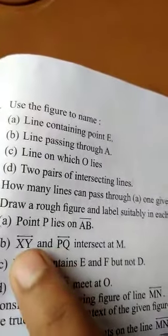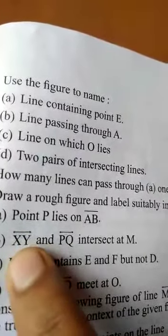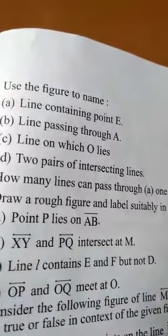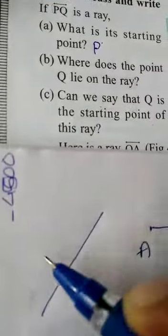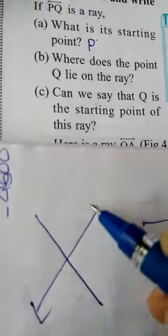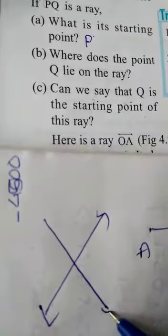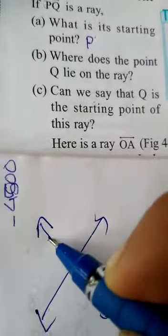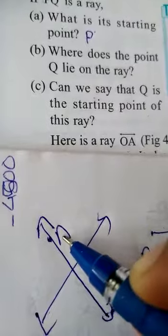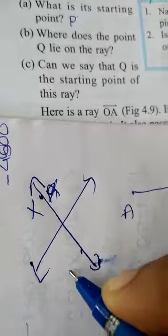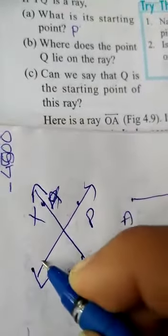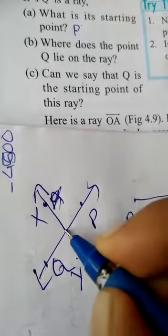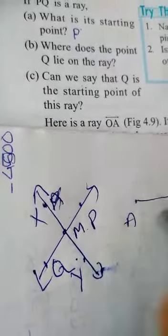Second one, arrow mark is there. That means XY is a line. XY and PQ intersect at M. That means draw two lines. Lines, arrow mark must be drawn. Name any two points as X and Y. Another P and Q intersect at M. Mark this point as M.